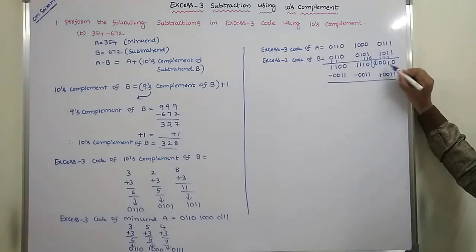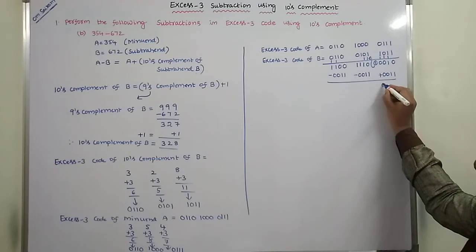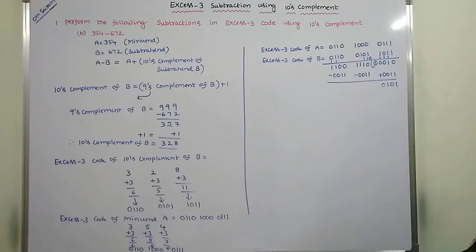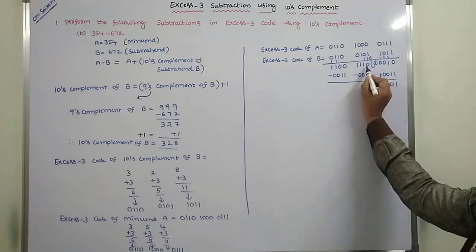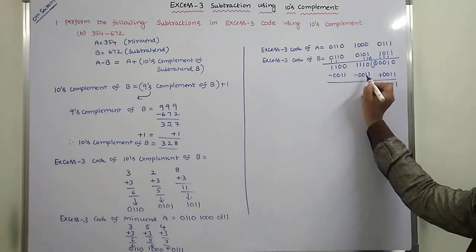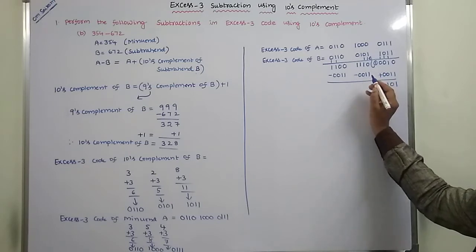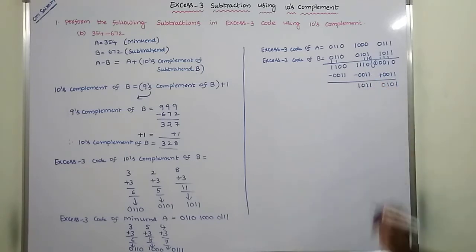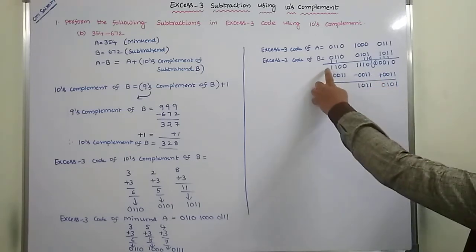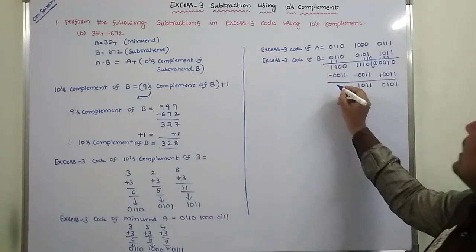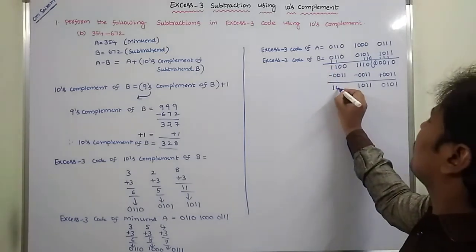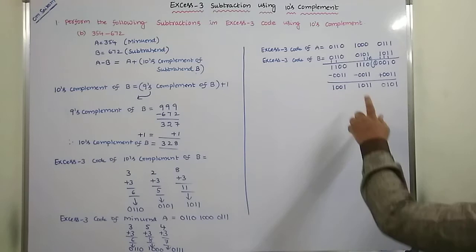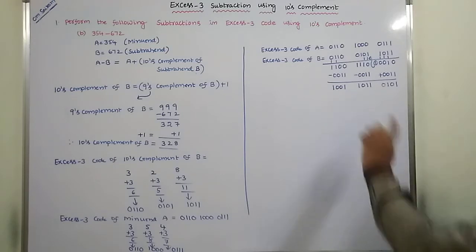Reading the result values: this value is 2, and 2 plus 3 is 5 → binary 0101. This value is 14, and 14 minus 3 is 11 → binary 1011. This value is 12, and 12 minus 3 is 9 → binary 1001. This is the result, and it is in ten's complement form.